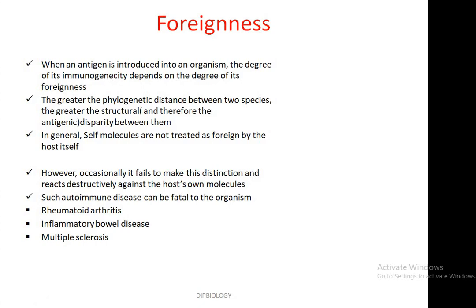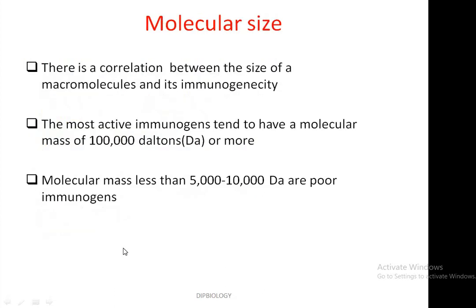This generates autoimmune disease, which can be fatal to the organism. Some notable autoimmune diseases in humans are rheumatoid arthritis, inflammatory bowel disease, and multiple sclerosis. Regarding molecular size: there is a correlation between the size of a macromolecule and its immunogenicity. The most active immunogens tend to have a molecular mass of 10,000 Daltons or more, while molecular masses less than 5,000 to 10,000 Daltons are poor immunogens.